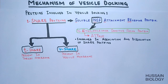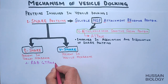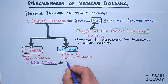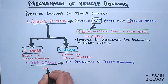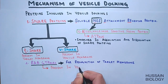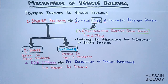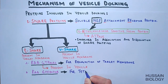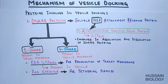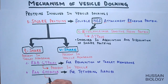The second major protein involved in the docking process is Rab GTPase. This molecule helps in recognition of the target membrane, meaning it is present on vesicles and guides them where to dock. The third major protein involved during docking is the Rab effector protein, which helps in tethering the vesicle to the membrane.